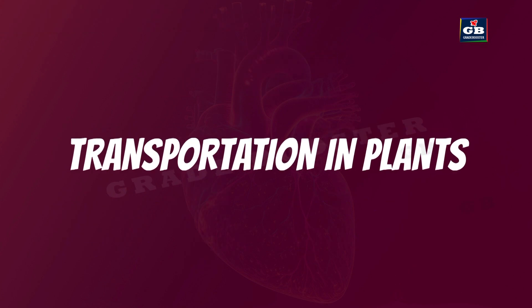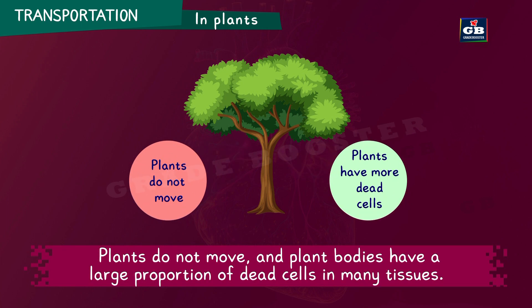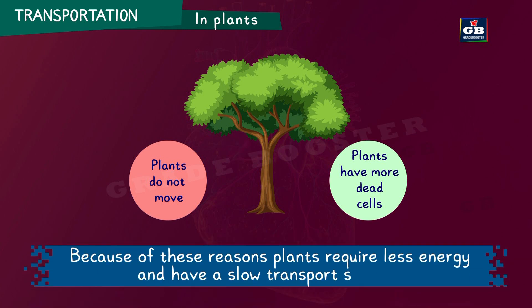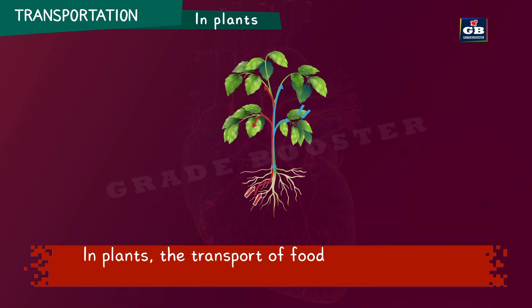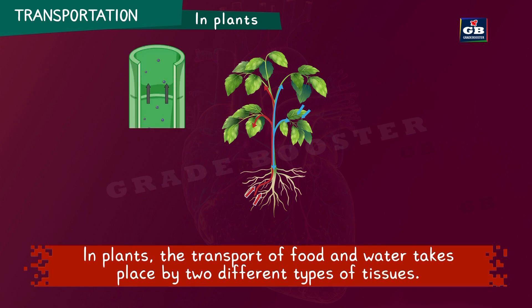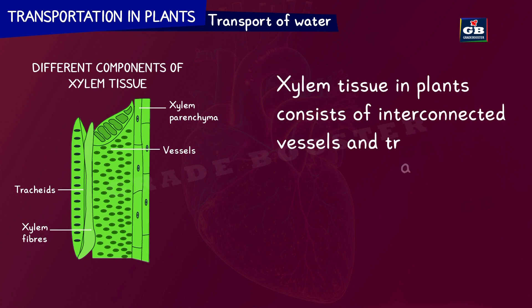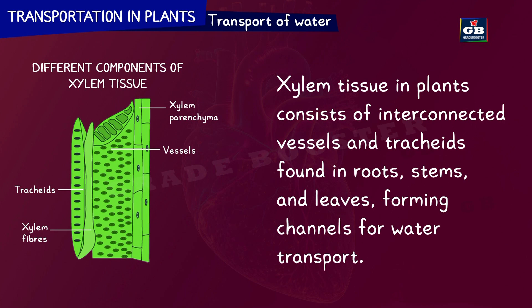Transportation in plants: plants do not move, and plant bodies have a large proportion of dead cells in many of their tissues. Because of these reasons, plants require very little energy and have a slow transport system. In plants, the transport of food and water takes place by two different types of tissues: xylem and phloem. Xylem tissue consists of interconnected vessels and tracheids found in roots, stems and leaves, forming channels for water transport.